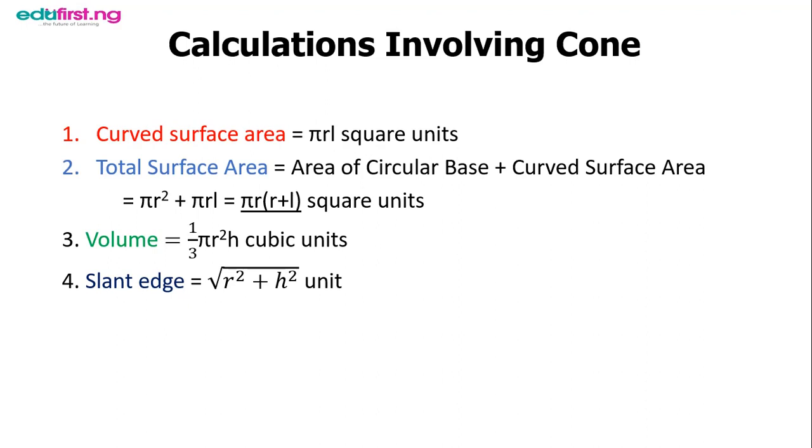Finally, we have the slant edge. You can be told to find the slant edge if it is not given. All you have to do is go back and study your Pythagoras theorem very well. The slanted edge l is the square root of r² + h².